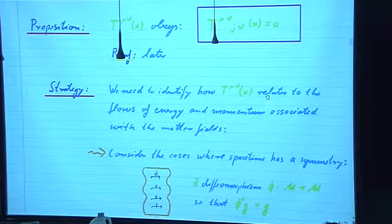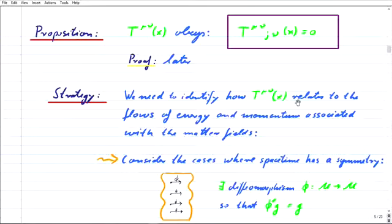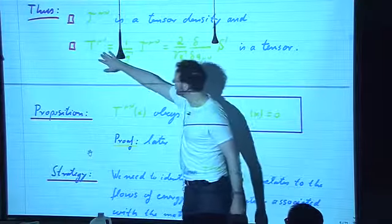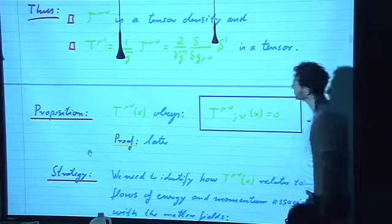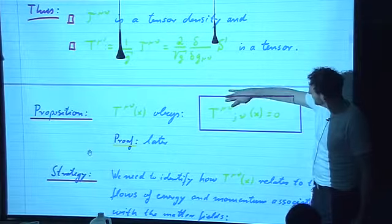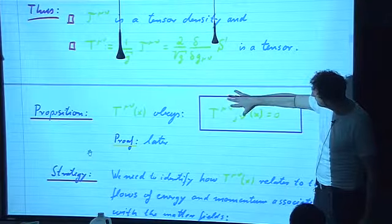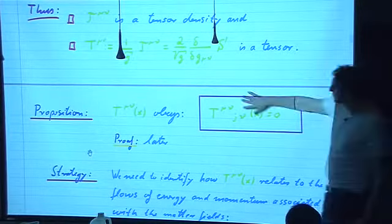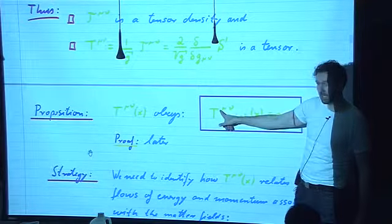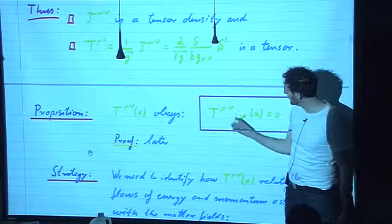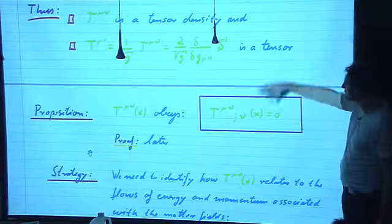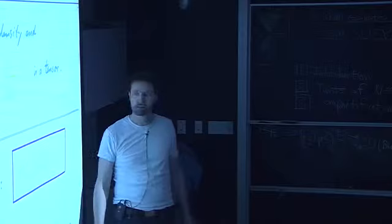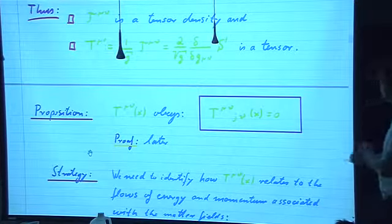Now here's an important proposition. The energy-momentum tensor we just defined — which is the functional derivative of the action with respect to the metric divided by sqrt(g) — has the property that when you take the covariant derivative and contract it, that equals zero: ∇_μ T^μν = 0. This is not a divergence — if this object only had one upper index, it would be the divergence, but it has two upper indices, so it is not a divergence. Why would that equation hold true?